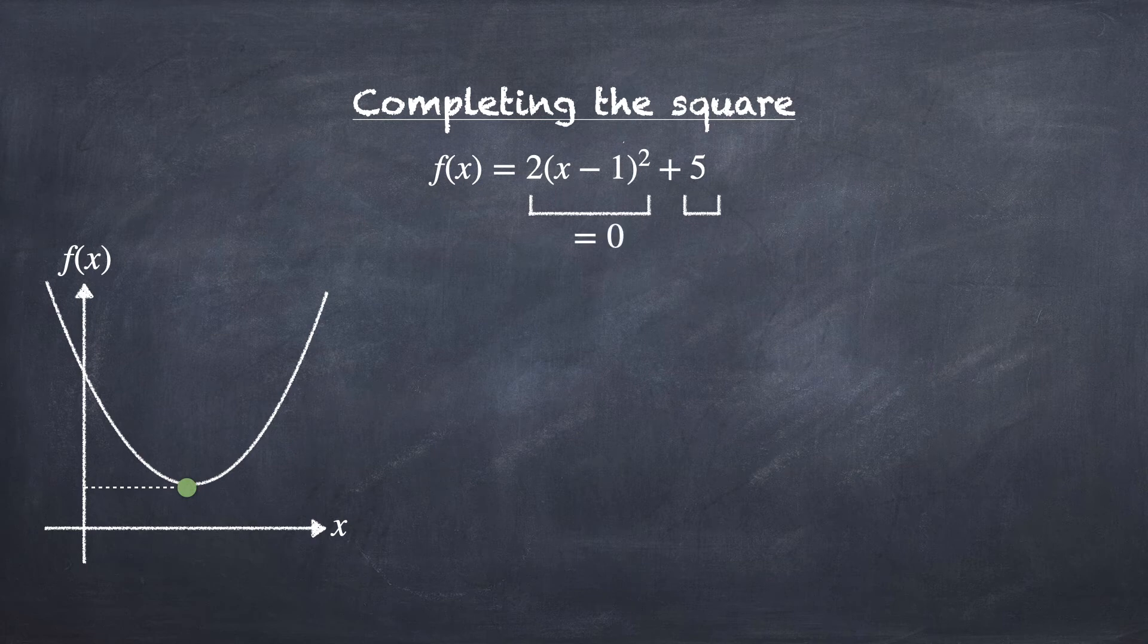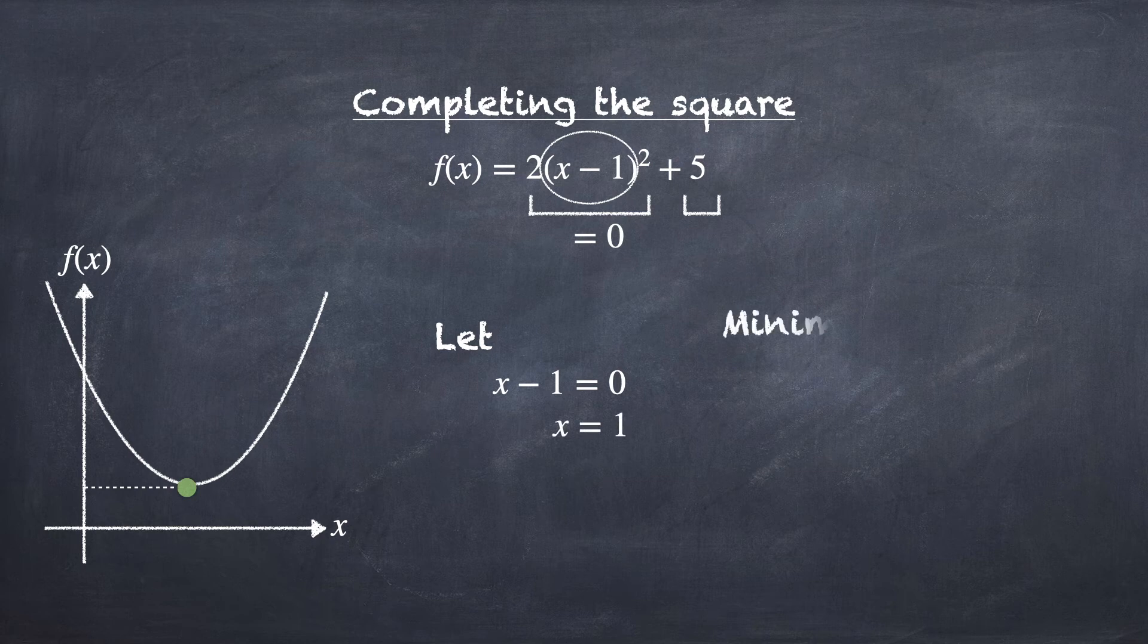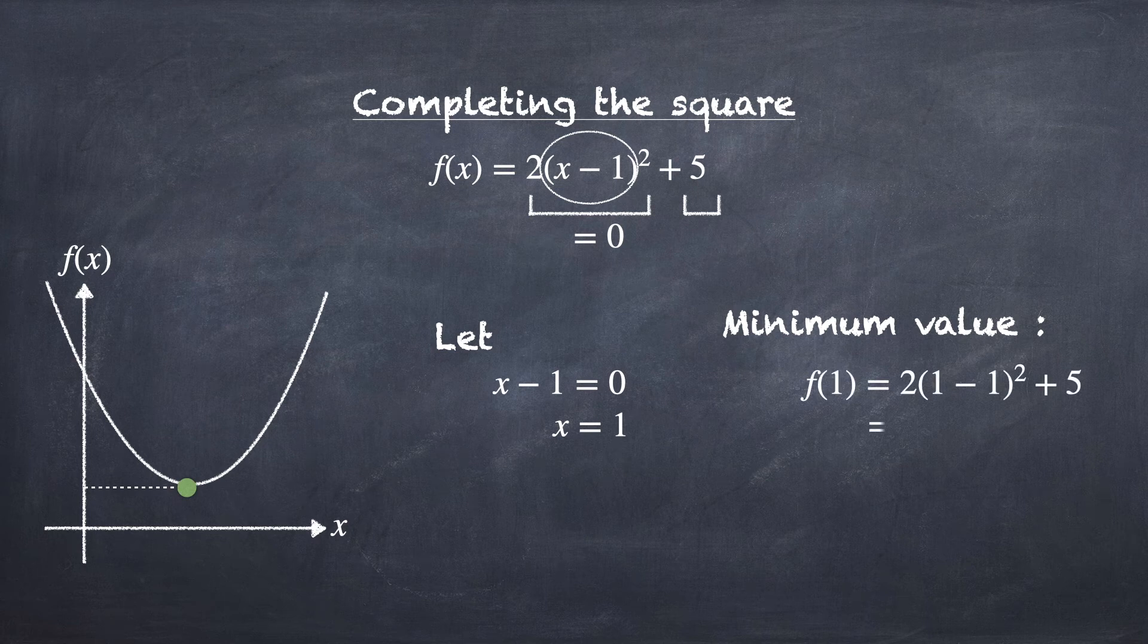Hence, to make it 0, we need x minus 1 to be 0. Letting x minus 1 equal to 0 and solve the equation, we obtain x equal to 1. To find the minimum value, we substitute x equal to 1 into the function and we will obtain 5.